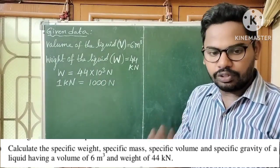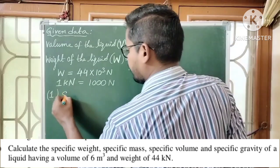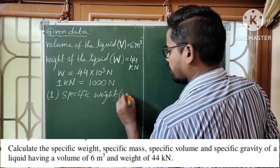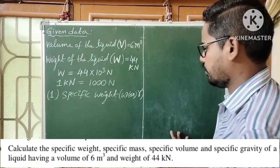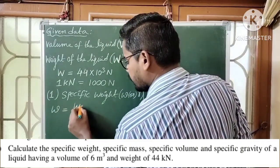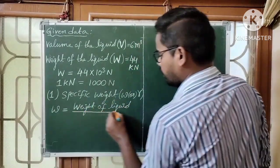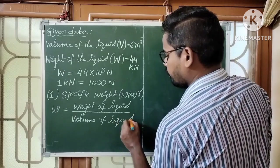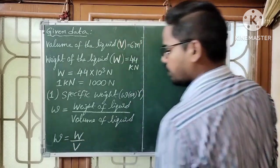We have to find 4 quantities. The first quantity is specific weight. Specific weight is denoted by omega, small w, or gamma — you can take any notation. Here I am going to use omega. The formula for specific weight is the ratio of weight of liquid to volume of liquid. So omega is equal to capital W by capital V.